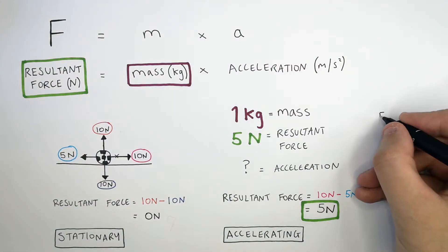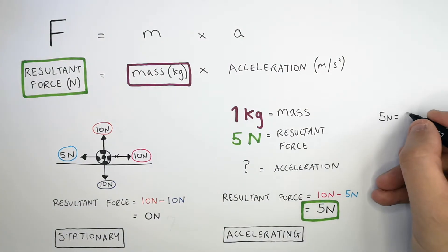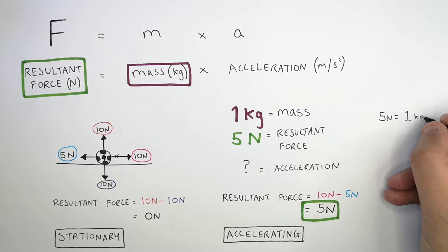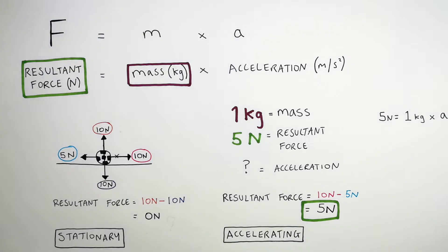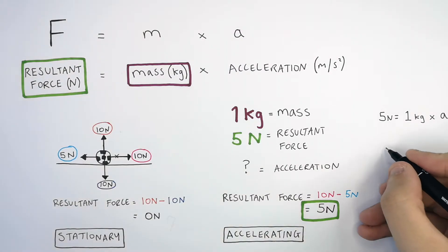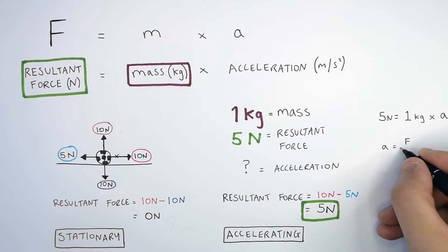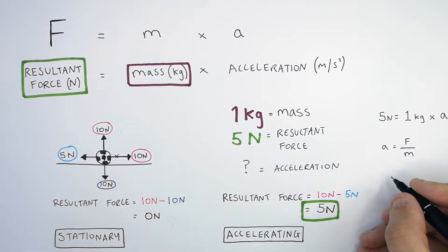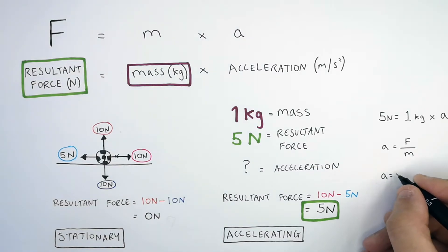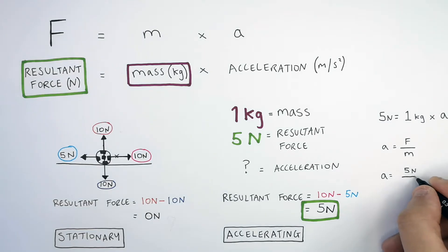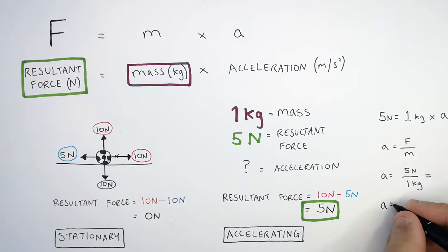Using F equals ma: 5 newtons equals 1 kilogram times acceleration. We rearrange the equation for A, so A equals F divided by M — acceleration equals force divided by mass. Substituting in the numbers: A equals 5 newtons divided by 1 kilogram. So the acceleration of this ball is 5 meters per second squared.